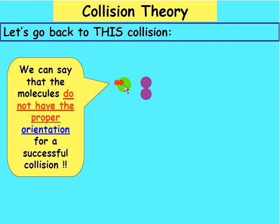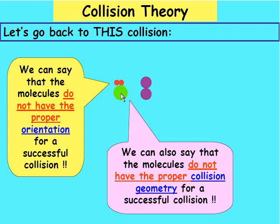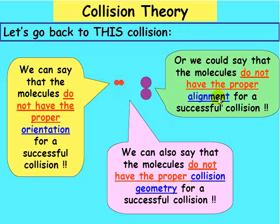We can say that these molecules do not have the proper orientation for a successful collision. We can also say that they don't have the proper collision geometry. One more term we can use for this is alignment. We can say the molecules don't have the proper alignment for a successful collision.